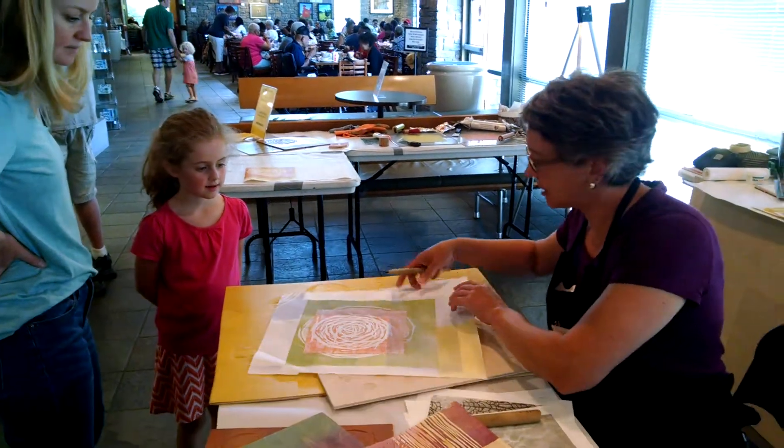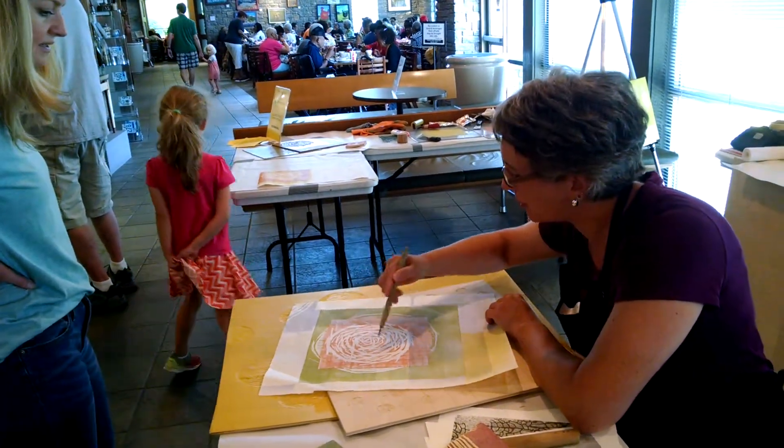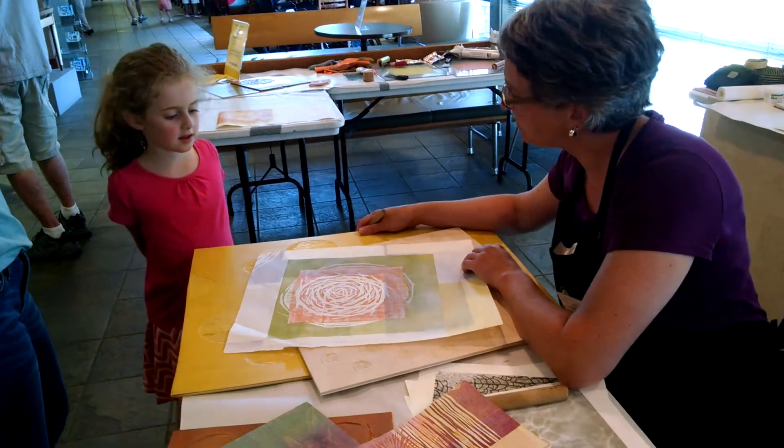So what I did was I carved out this orange shape right over there on the block, and then I'm printing it on top of it. Yeah, neat.